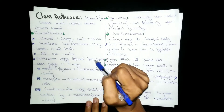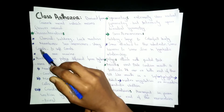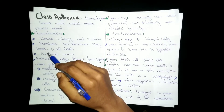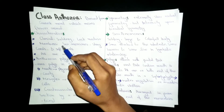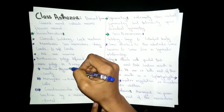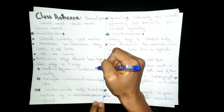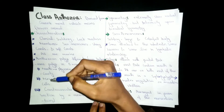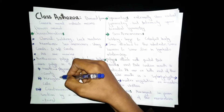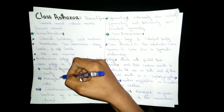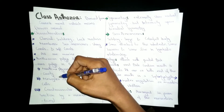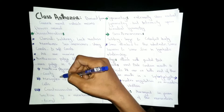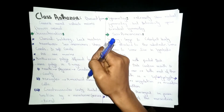Compared to Hydrozoa, Anthozoa differs in three ways. First, the mouth leads into a pharynx which opens into the gastrovascular cavity. Second, the mesoglia, which is a jelly-like layer between the endoderm layers, contains amoeboid mesenchymal cells — unlike Hydrozoa where such cells are absent. In class Anthozoa, amoeboid mesenchymal cells are present.